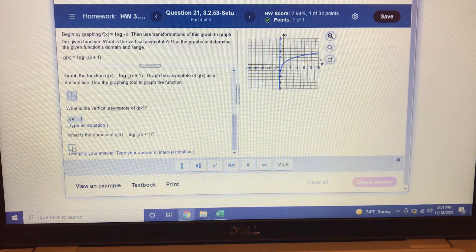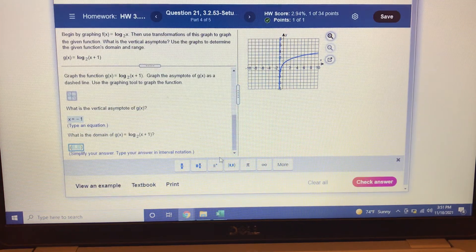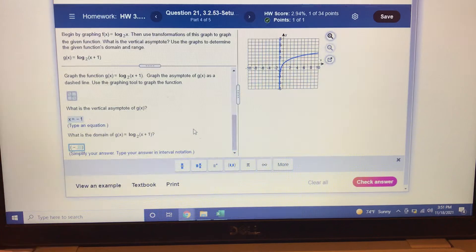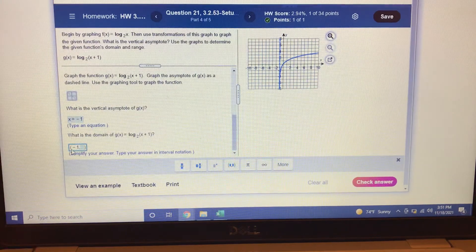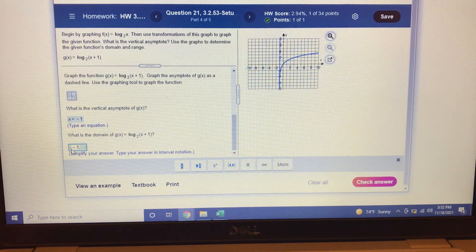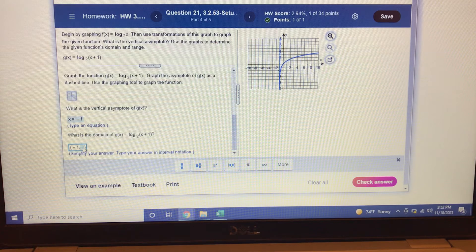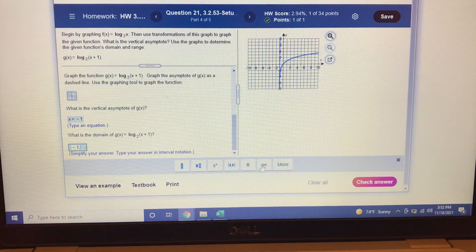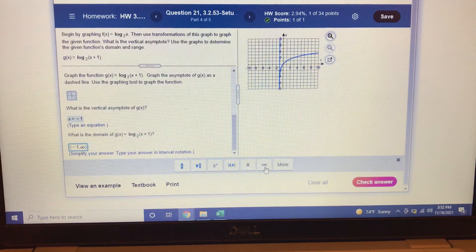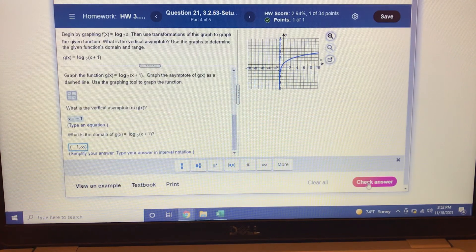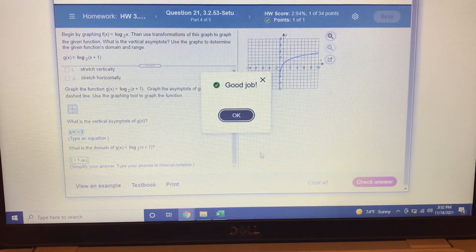So my domain is going to be open parentheses. Starts at negative 1. It doesn't hit negative 1, so I use parentheses instead of a bracket. And then it goes all the way to infinity. And to do the infinity, it's right down here. You've got to click the button. Check it. Good job.